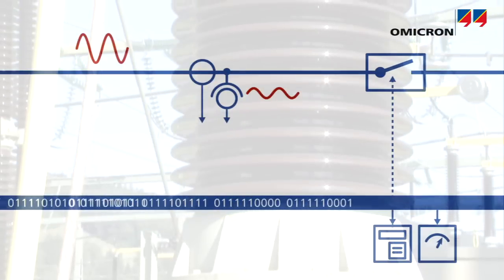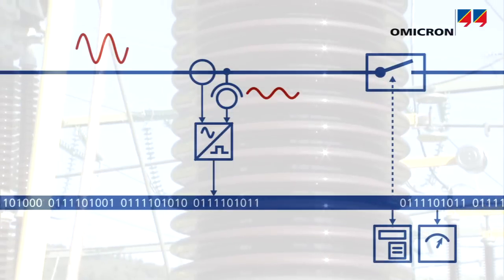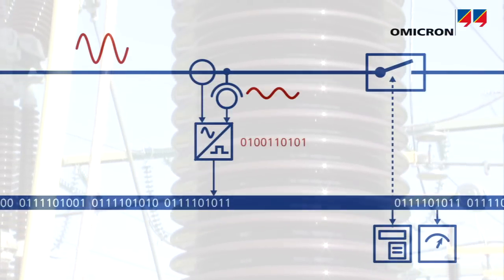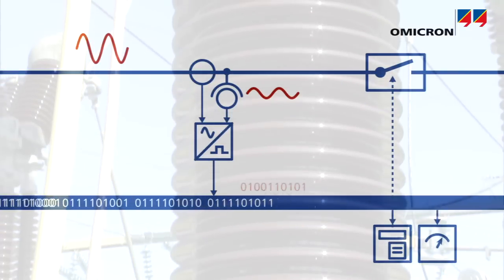From instrument transformers or sensors, a merging unit collects the measured values, merges these sampled values into a data stream belonging to one feeder, and publishes them to the substation network.